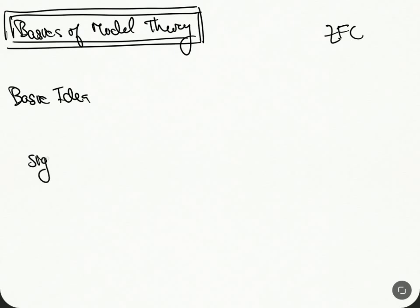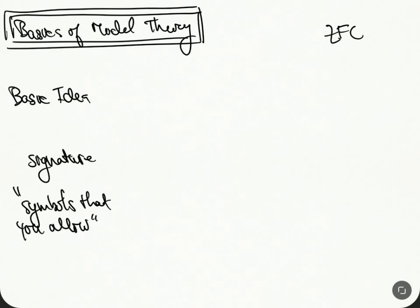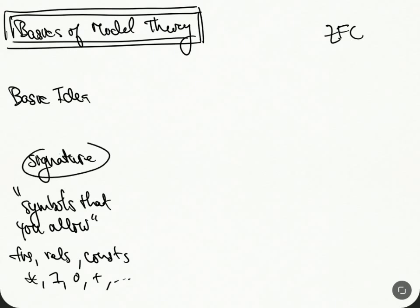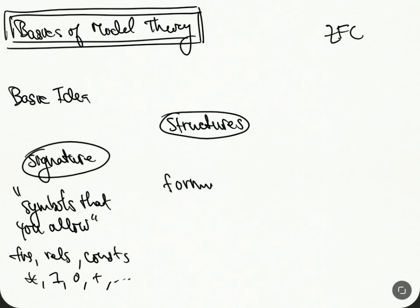We start with a signature, which is just something that encodes the symbols that you allow. We're going to be doing things that are first order, so it could be functions, relations, constants — things like times, 1, 0, plus, things like this. From the signature, there are kind of two things you can do: you're going to develop structures, which are semantic things, and you're going to develop formulas, which are syntactic — things you can say with symbols.